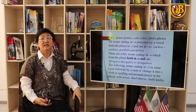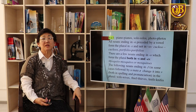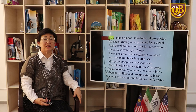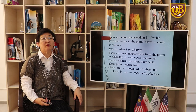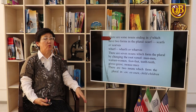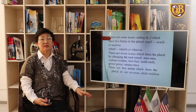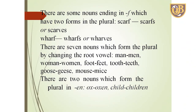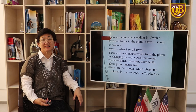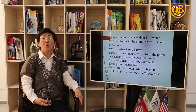The following nouns ending in -f, in some cases followed by a mute -e, change it into -v in both spelling and pronunciation: wife → wives, thief → thieves. There are some nouns ending in -f which have two forms in the plural: scarf — scarfs or scarves; wolf — wolfs or wolves.